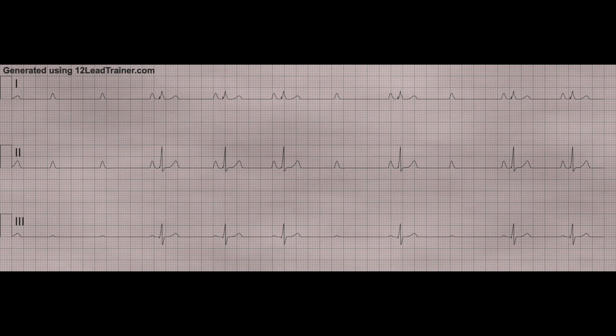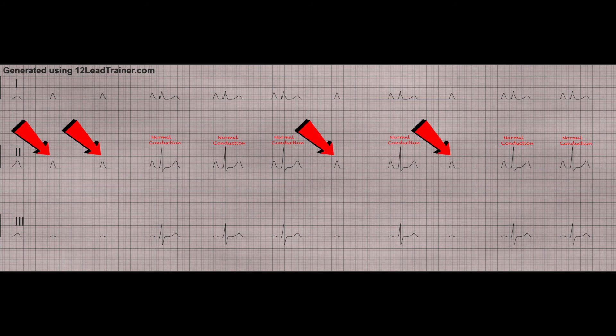Let's go over some of the features of the Mobitz 2 on the 12-lead. I've put arrows pointing to the P waves that are not followed by a QRS complex — those are the specific P waves where the impulses are blocked. If they weren't blocked, the ventricles would produce a QRS complex. Where I marked 'normal conduction,' there is a P wave, a QRS complex, and a T wave — it happens three times in a row. Then you have that lone P wave off by itself. The P wave to P wave intervals pretty much march out on a Mobitz type 2, but your QRS to QRS does not march out.